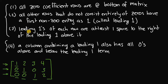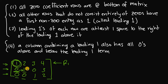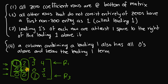Rule three says leading ones of each row are at least one space to the right of the leading one above it. In row 1, the leading one is in the very first column. The leading one in row 2 must be at least one column to the right — and it is. Looking at row 3, its leading one is also at least one column to the right of the leading one in row 2.